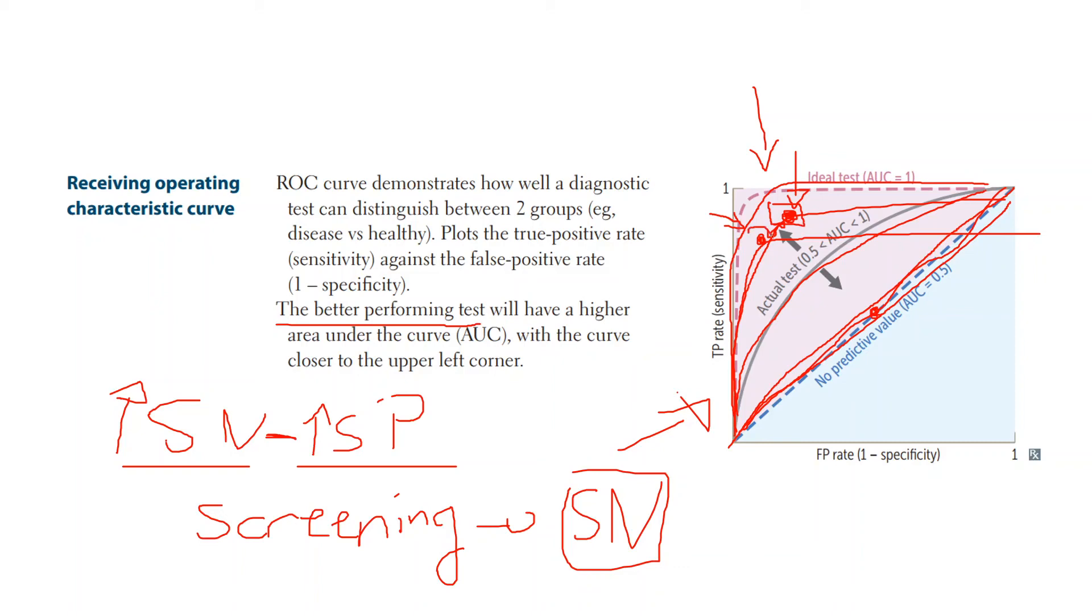However, this point is going to be best for a confirmatory test because with a confirmatory test, you want the specificity to be highest. And the only way you can get a very high specificity is by going to the leftmost point. Again, the highest point is going to be high sensitivity. But for a confirmatory test, you're going for the leftmost point.